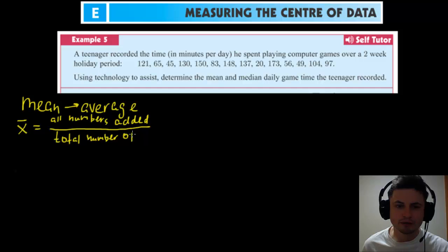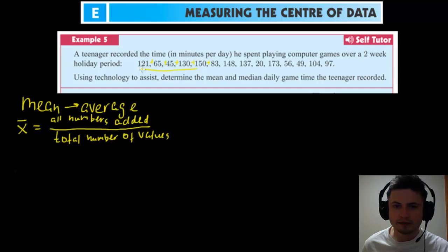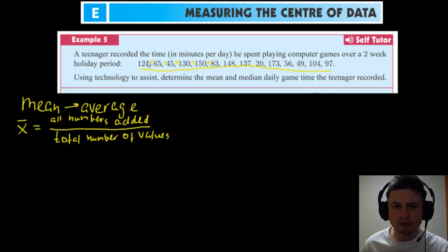The symbol for mean is x-bar. X-bar equals all numbers added up divided by the total number of values. So in this example, we just have to add up all these values and then divide by 14, since there are 14 data points. This will give us the mean.